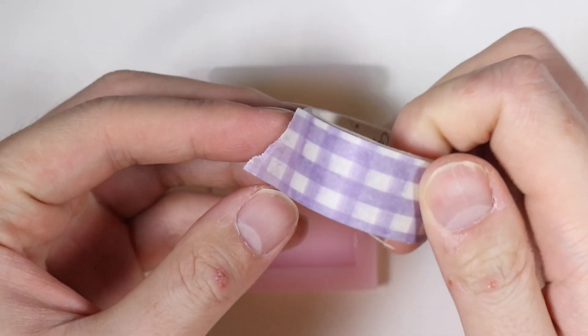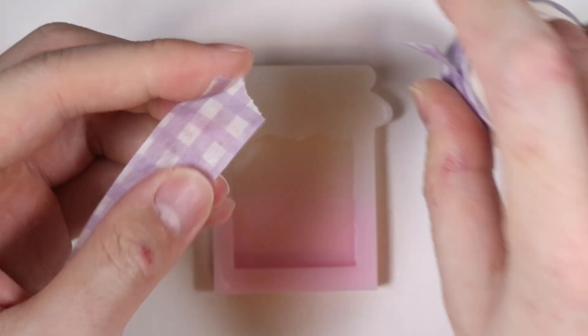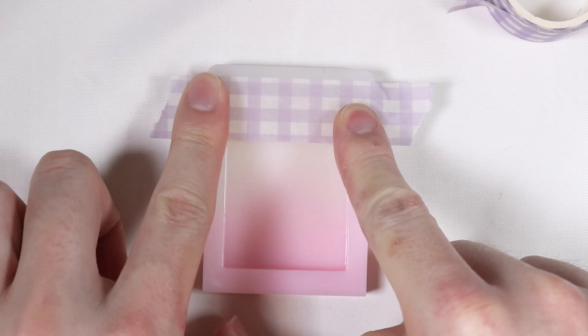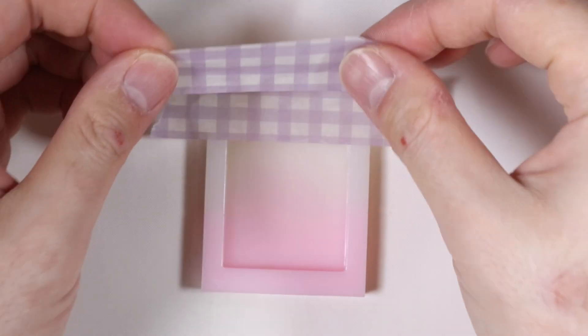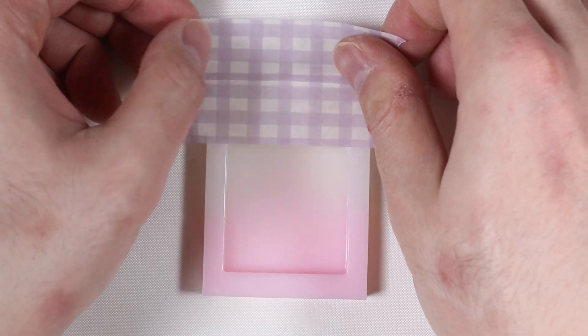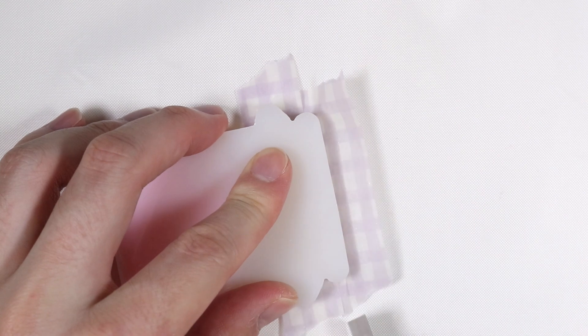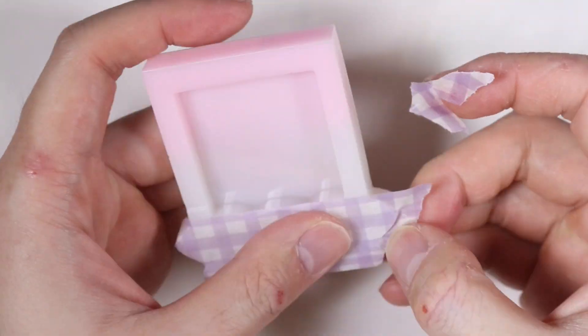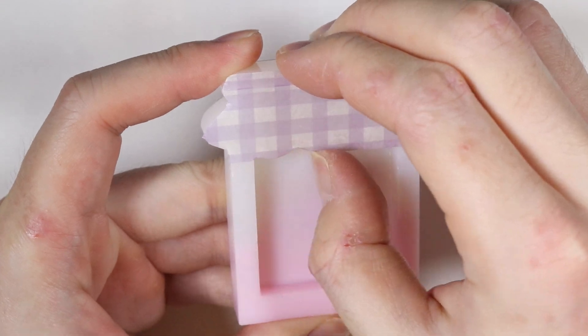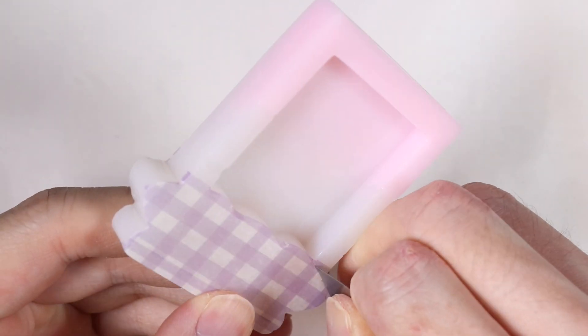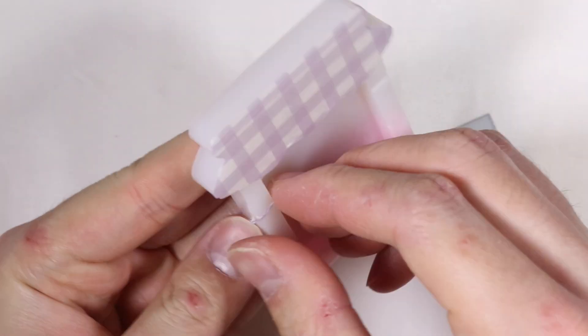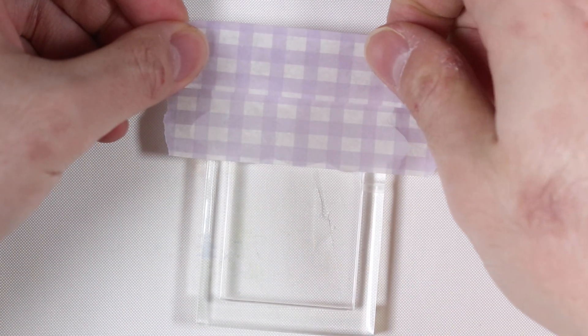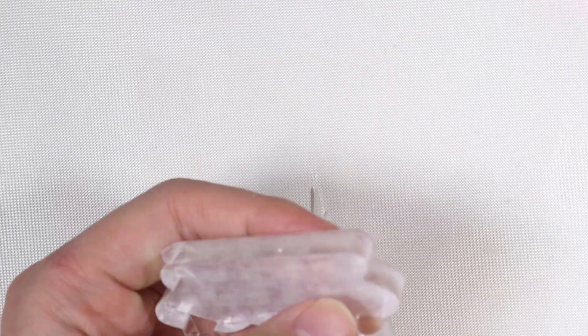And then I have this very checkered washi tape that I got from a previous Sophie and Toffee box. And it's the only washi tape that fits that looks like kind of like the jar lid, so I put that on top of the jar. And then using a blade, I'm just going to cut out the excess washi tape. And I repeat the same steps for my clear jar. And I did want to use other washi tapes, but this is the only one that was checkered that fit.